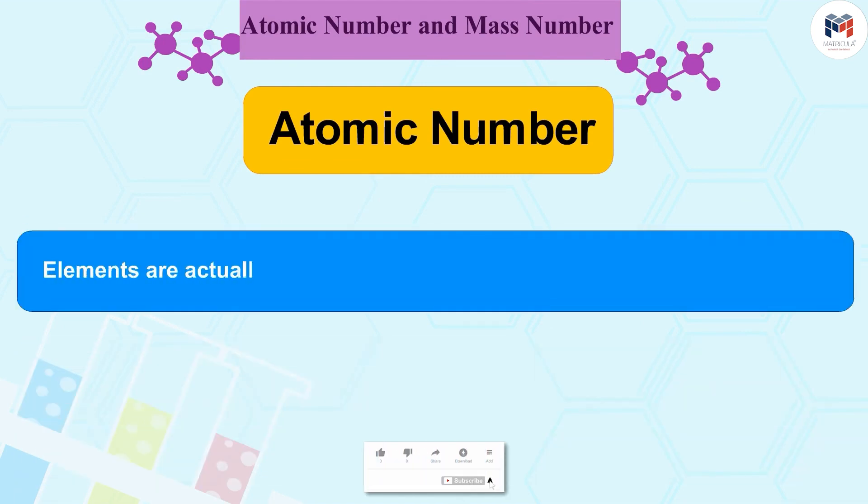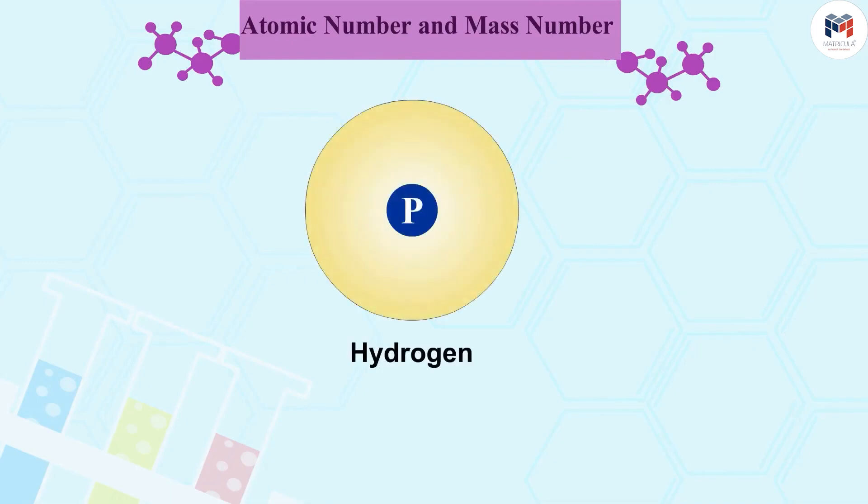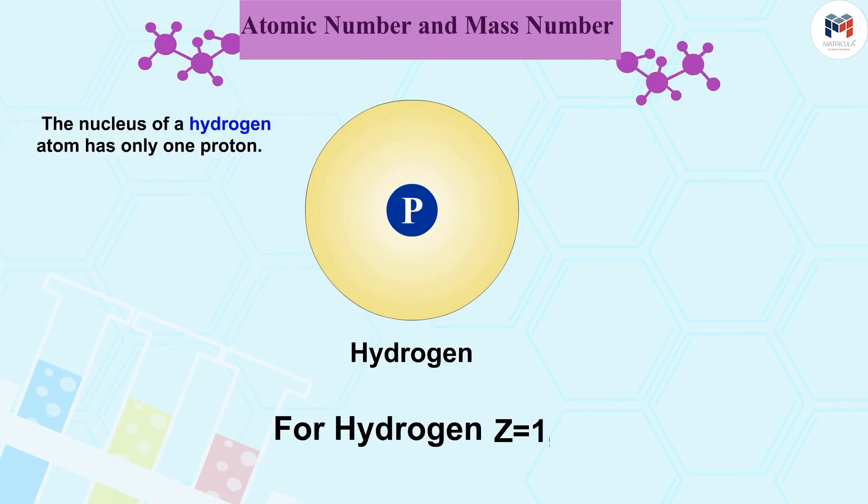In fact, elements are actually defined by the number of protons present in their atom. For example, Z equals 1 for hydrogen because the nucleus of a hydrogen atom has only one proton.